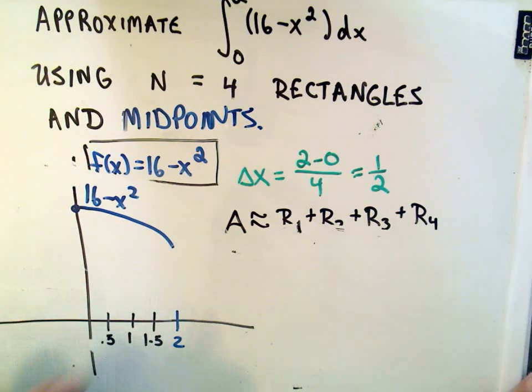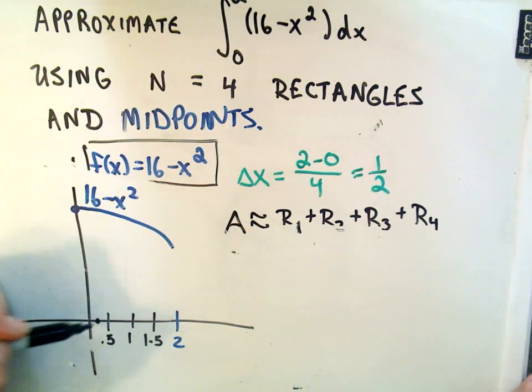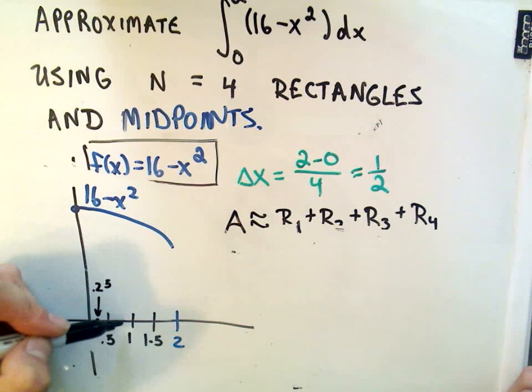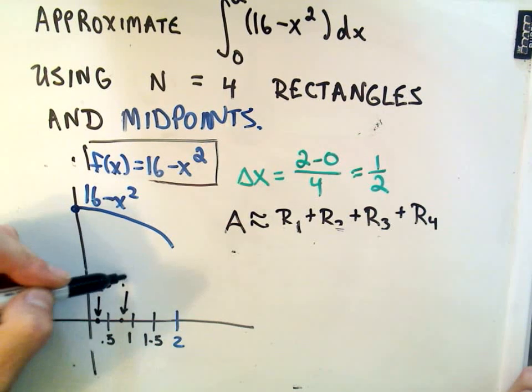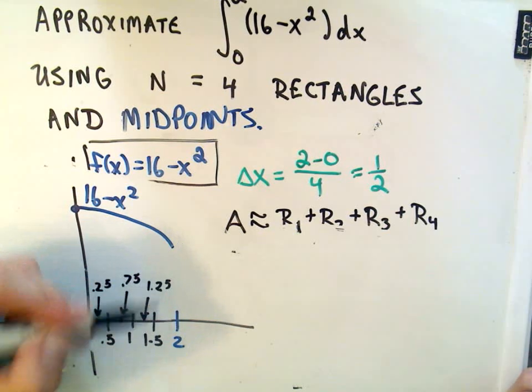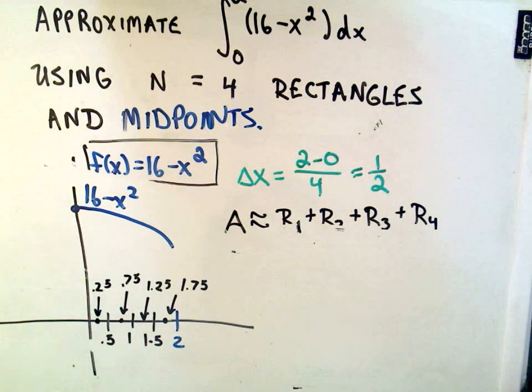But now to get the heights of our rectangles, if we use midpoints, we just have to use the midpoint of each interval. So this would be the midpoint .25. This would be the midpoint .75. This would be the midpoint 1.25. And this would be the midpoint 1.75. So make a mental note of those values. I'm going to erase them just so my picture doesn't get too cluttered. But that's the midpoint of each interval.